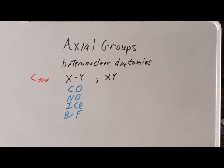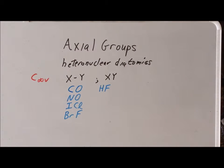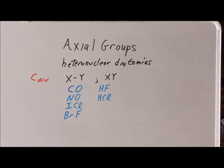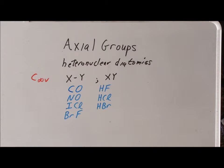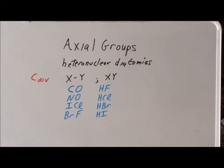Probably the most important class of these heteronuclear diatomic molecules are the halo acids. We have the weak acid hydrogen fluoride, which is hydrofluoric acid when dissolved in water. We have hydrogen chloride, which forms hydrochloric acid; hydrogen bromide, which forms hydrobromic acid; and hydrogen iodide, which forms hydroiodic acid when dissolved in water. These are eight of the most important examples of heteronuclear diatomic molecules belonging to the symmetry group C∞v.